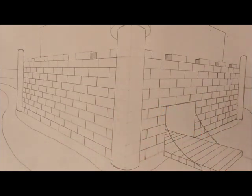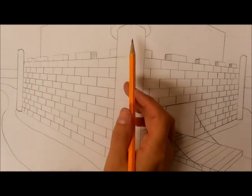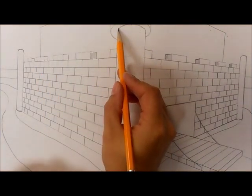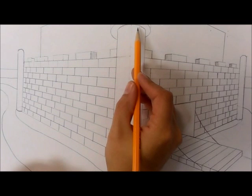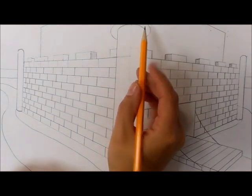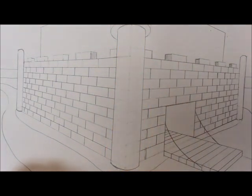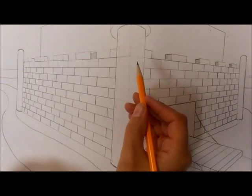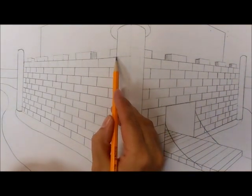If you remember back to making the tower, if we were making the end of the tower above the horizon line it was a frowny face, below the horizon line it was a smiley face. When we do the bricks it's going to be the same idea.